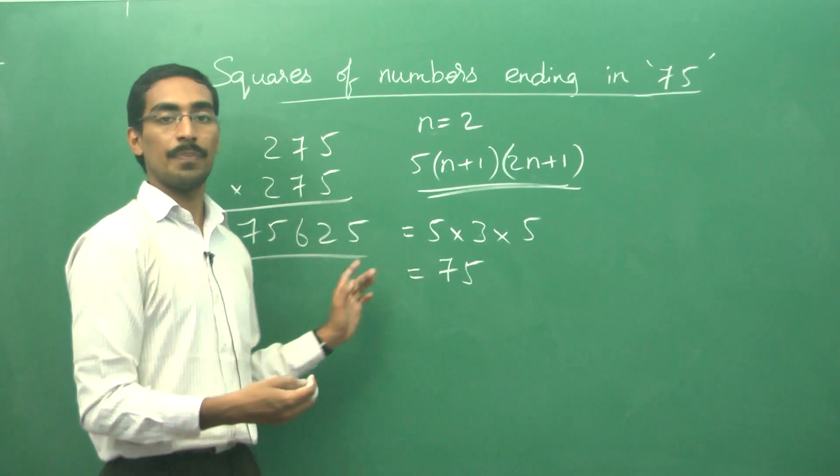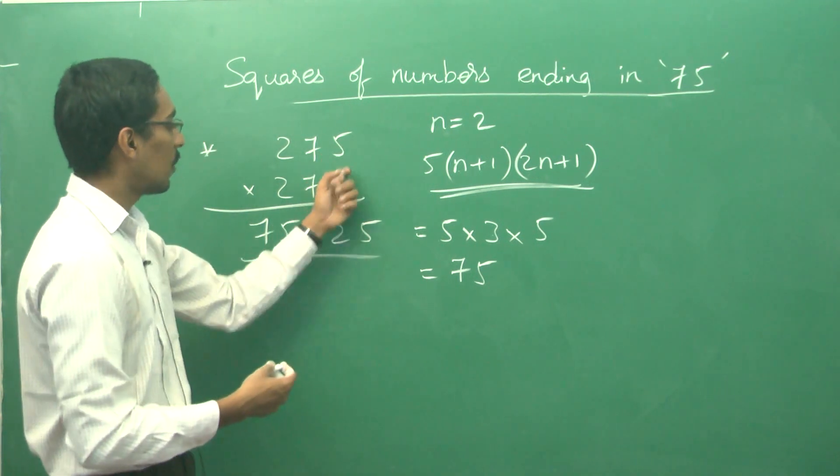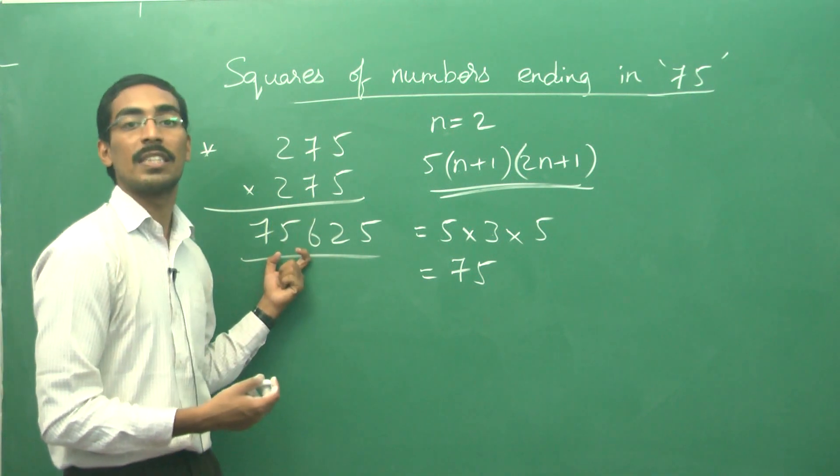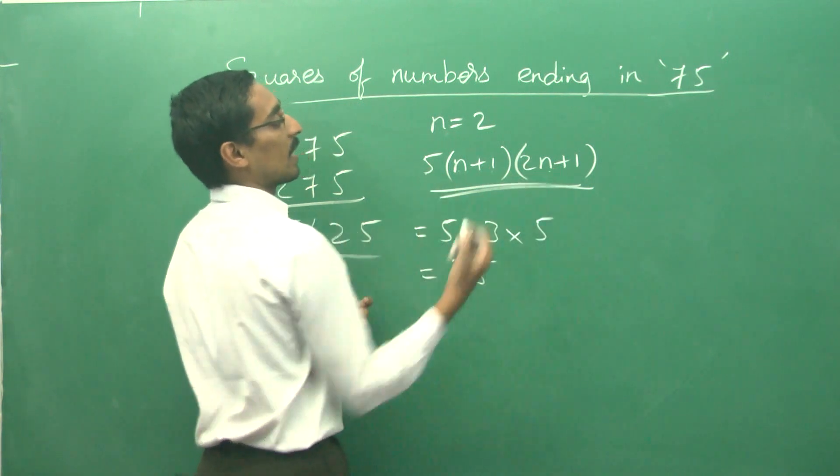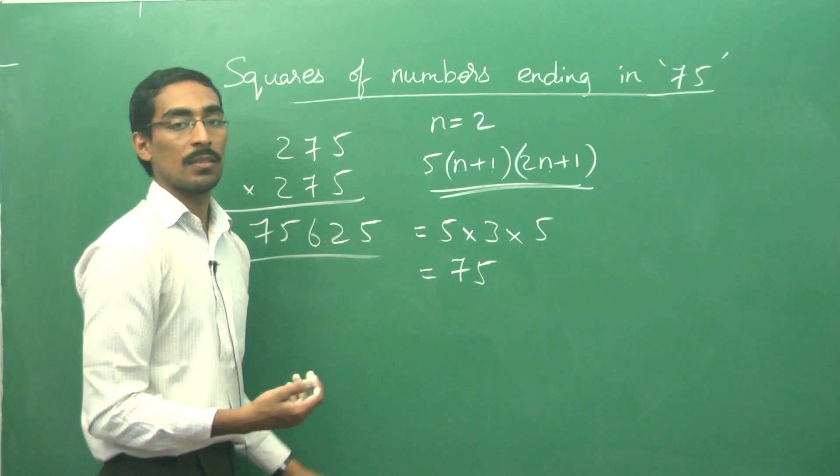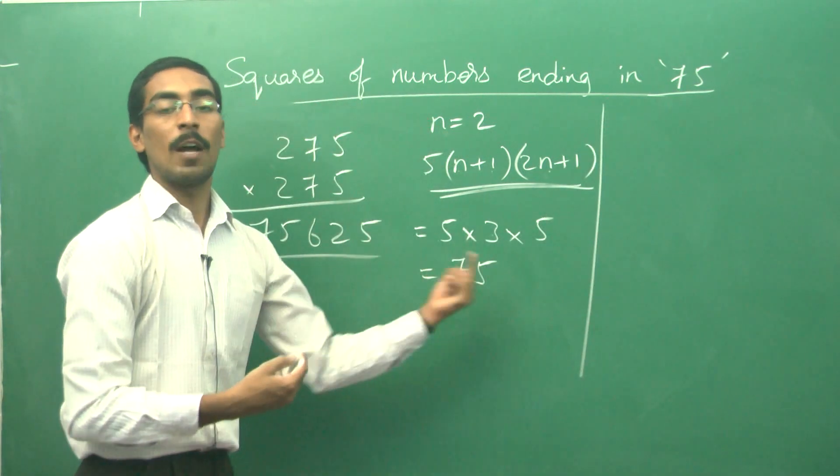Is this clear? Otherwise you should have done 5 into 5 equals 25, then 27 into 28, that would have given 756. Compared to that, this will definitely be easy for us if you remember this one extra step: 5 into (n+1) into (2n+1). Let us see one more example.